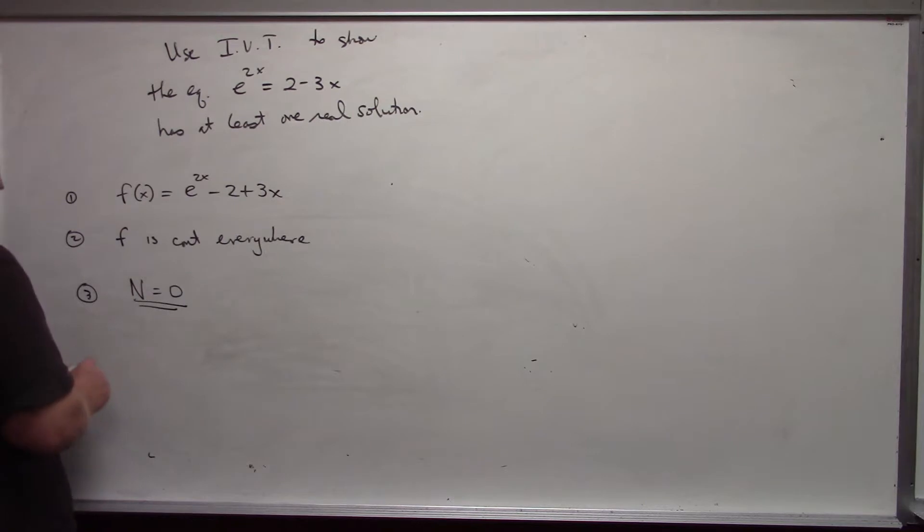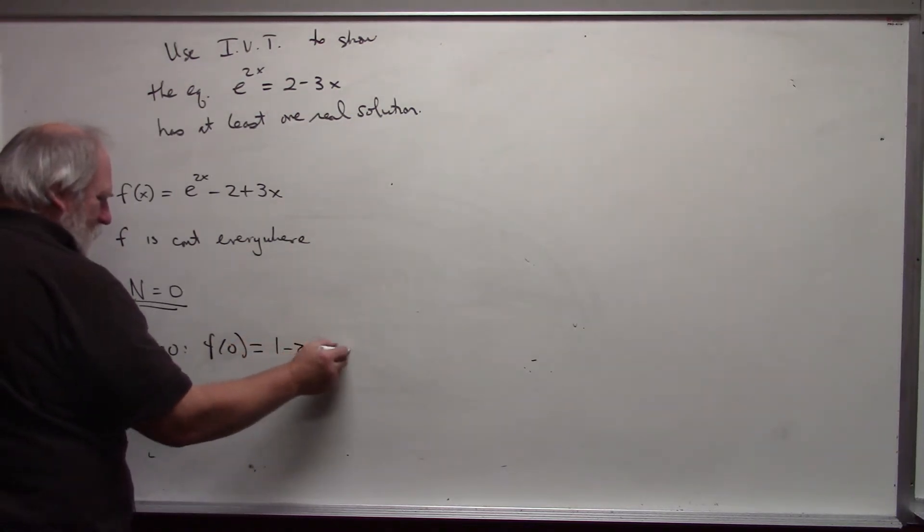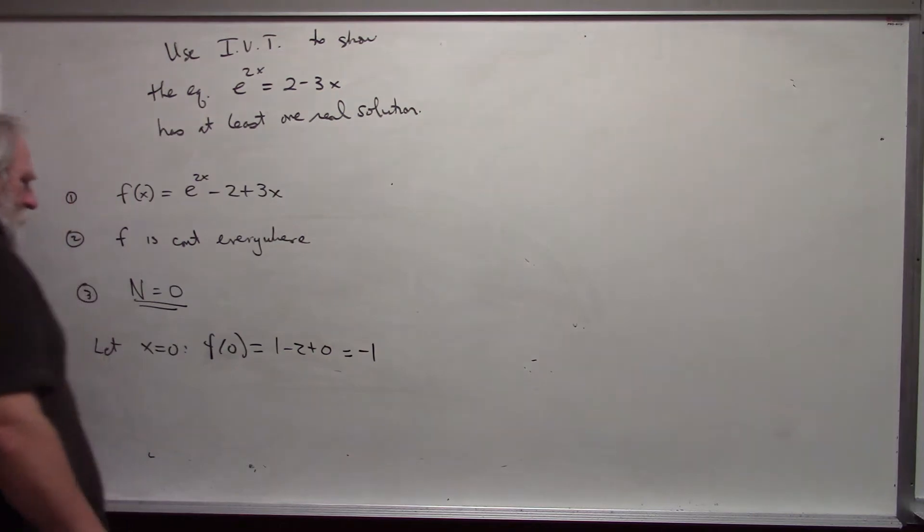I will start off by letting x be zero. F(0) comes out to be 1 - 2 + 0, which is -1. My functional value is negative. That means I need to find a functional value that is positive. And there's lots of things we can choose. The simplest, easiest thing is to just let x equal one.